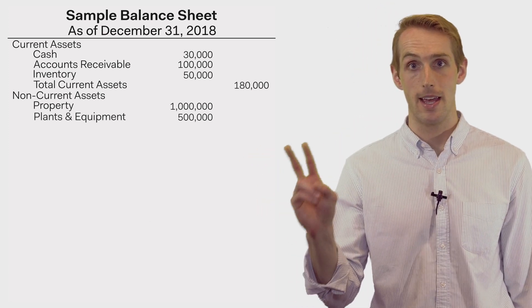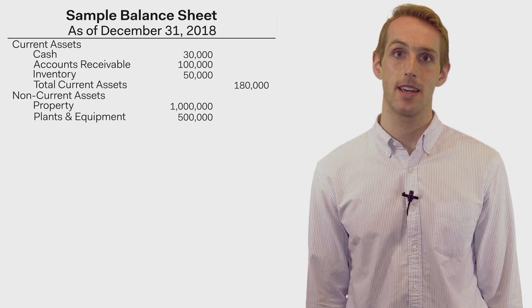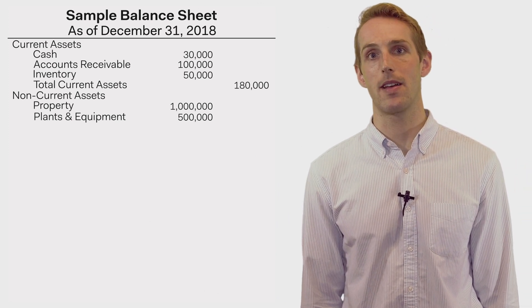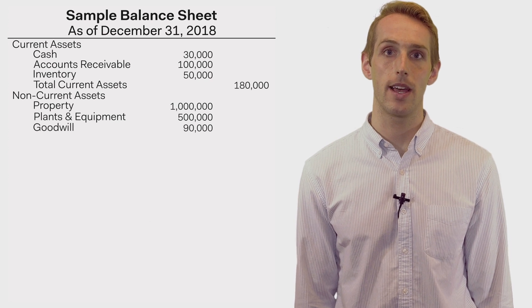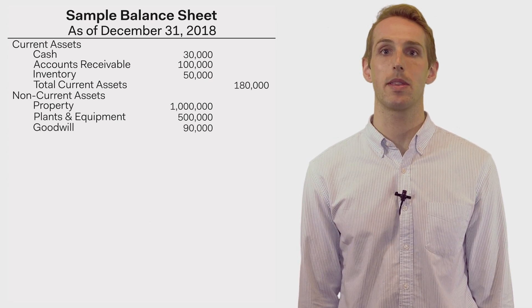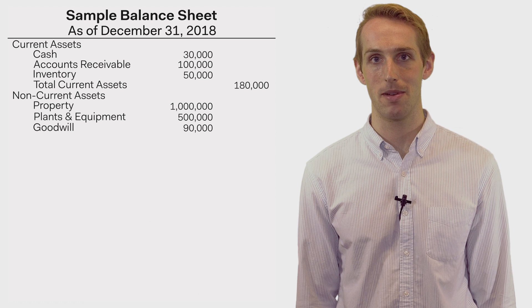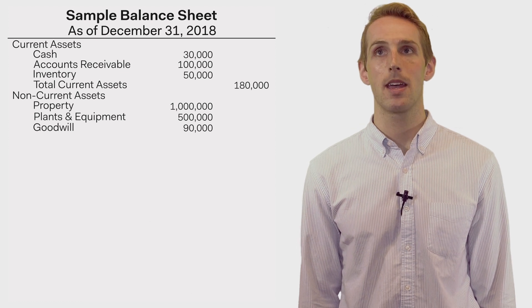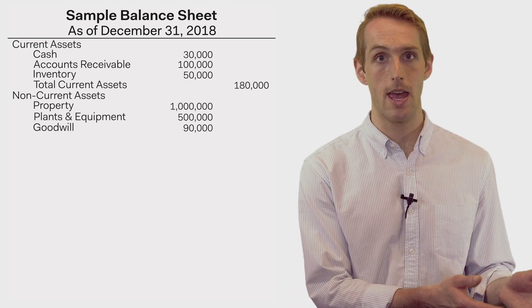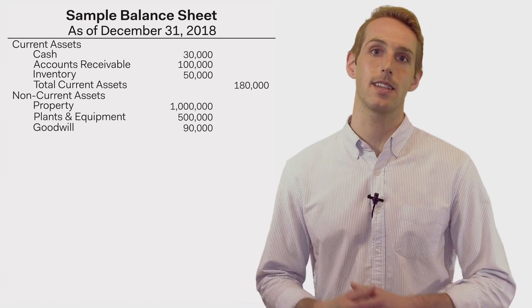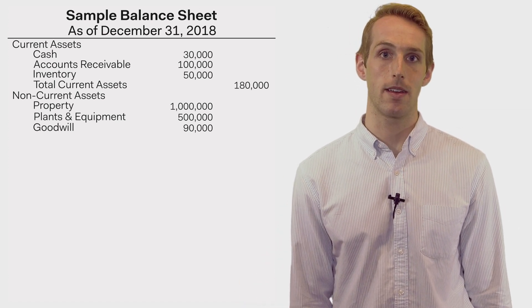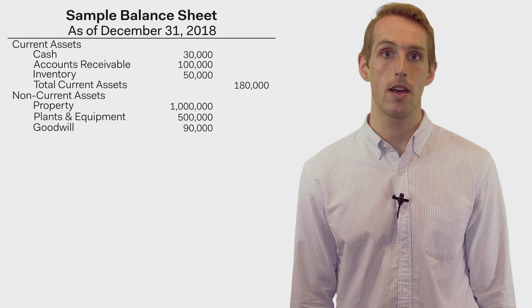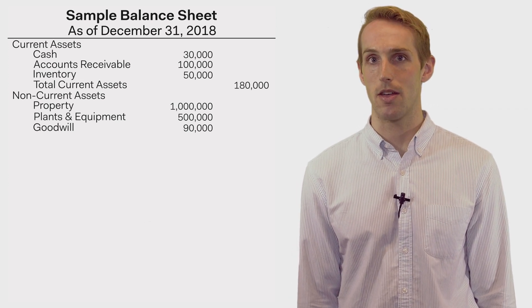The second type is intangible non-current assets. Examples of those would be something like a patent or goodwill. Goodwill is an intangible asset associated with the purchase of one company by another. It can often be thought of as the difference between the price actually paid for a company and the fair value of the company's assets and liabilities — for example, a strong brand name, which is often difficult to put a price on otherwise.